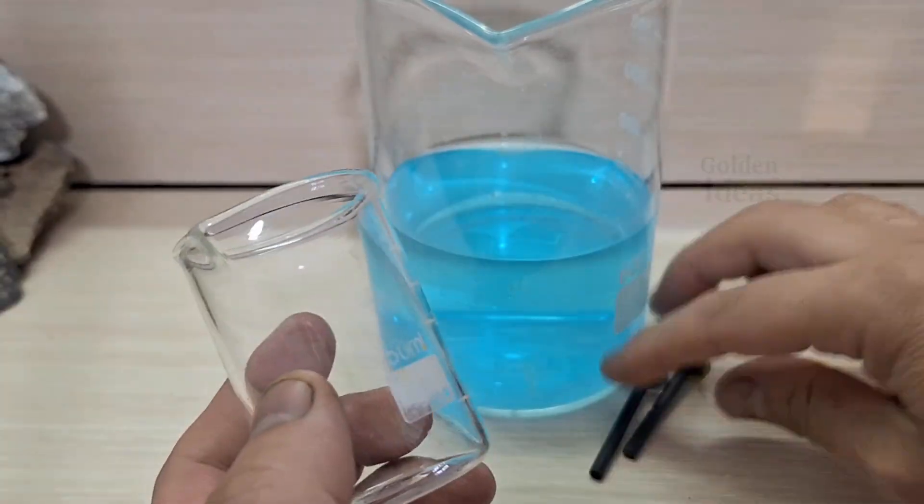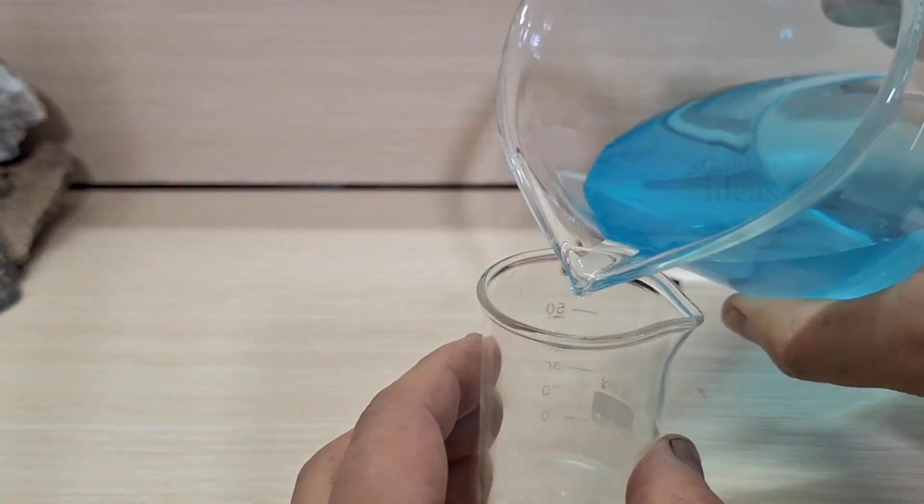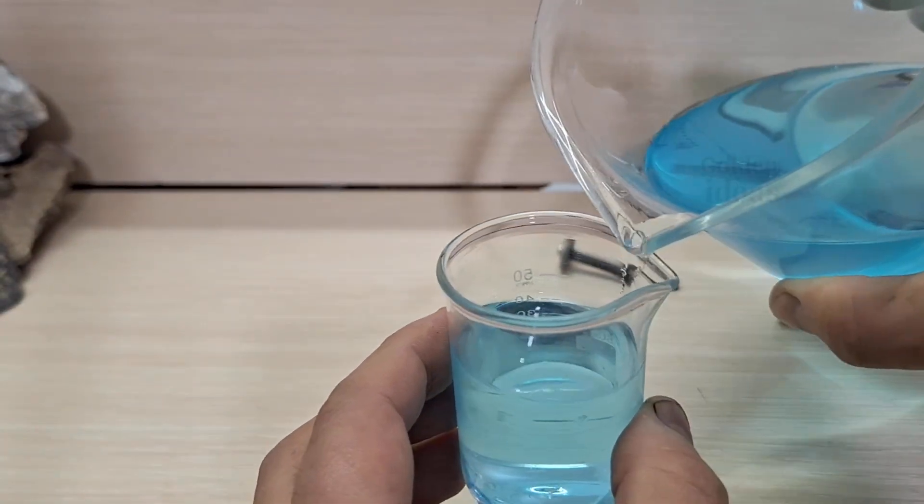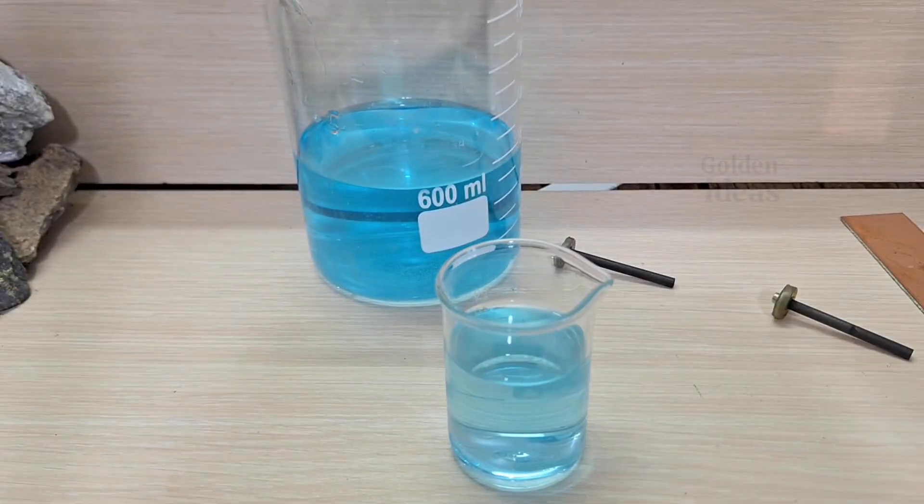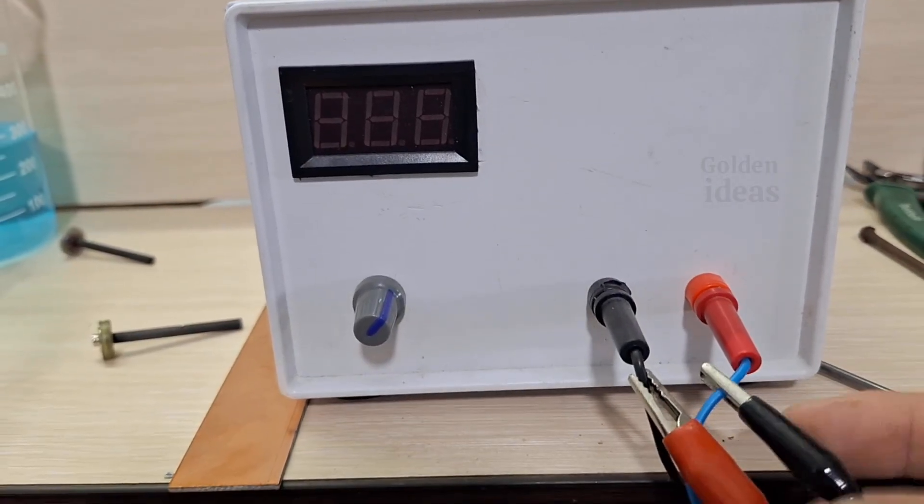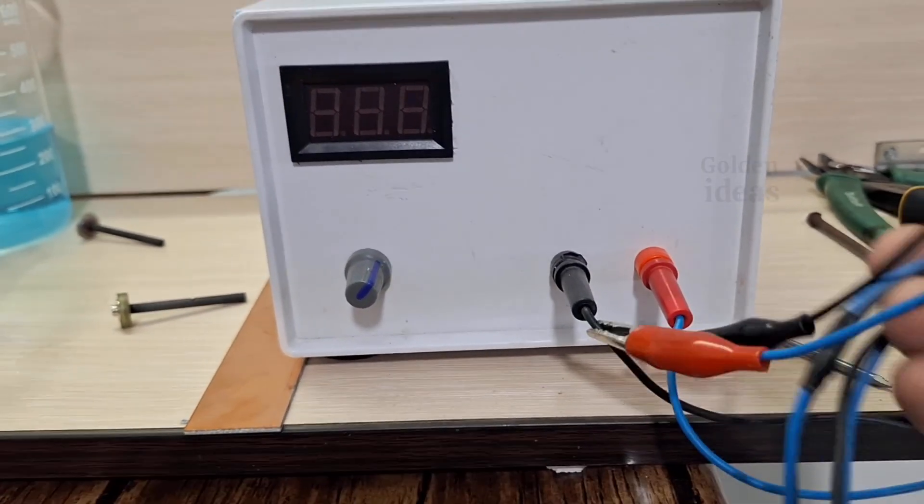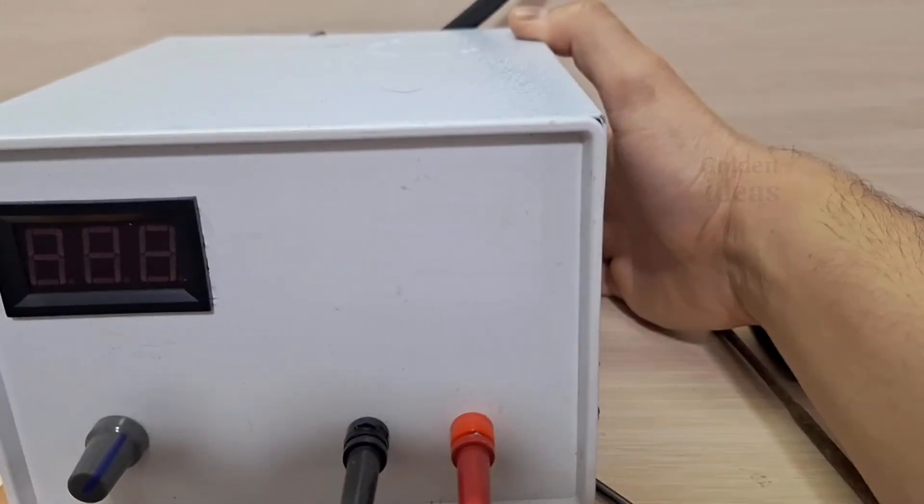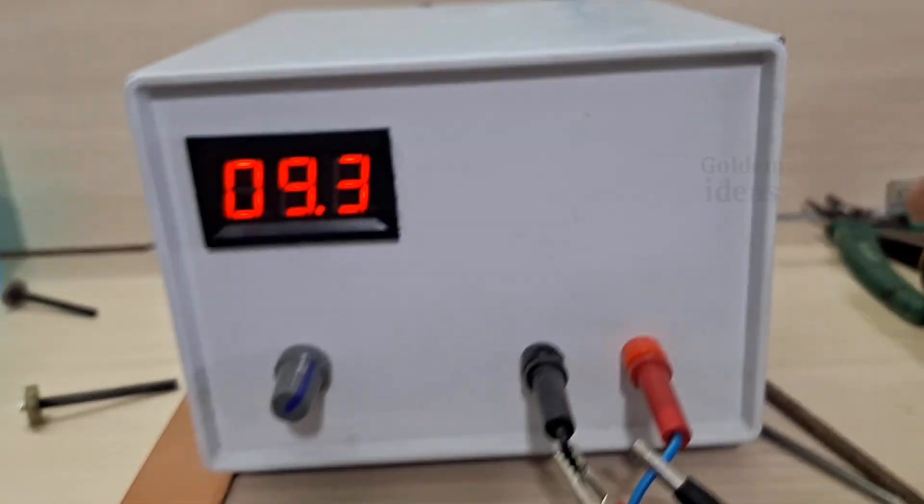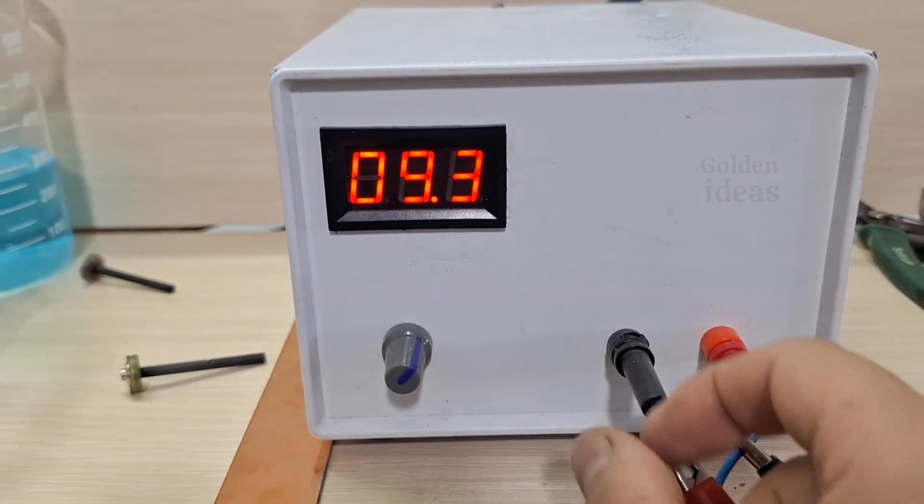Now I'm pouring some of the solution into a smaller beaker so I can place the graphite rods inside. If you have access to larger graphite rods, feel free to use a bigger beaker. You can use a DC power supply like this one, or even a regular battery will work. I've chosen a voltage of 5 volts for this experiment.